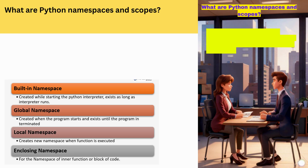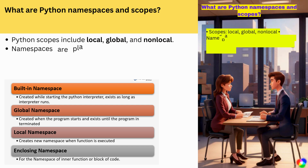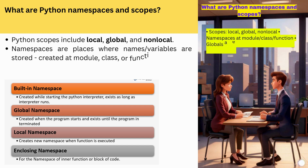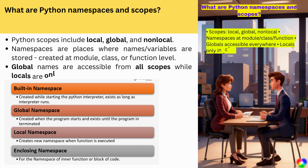What are Python namespaces and scopes? Python scopes include local, global, and non-local. Namespaces are places where names and variables are stored, created at module, class, or function level.